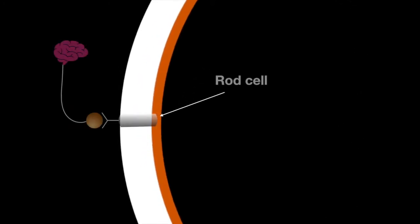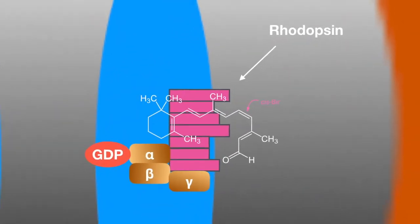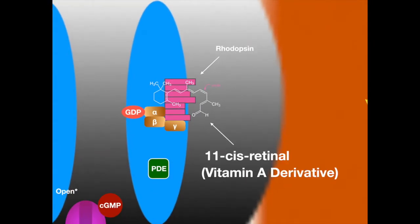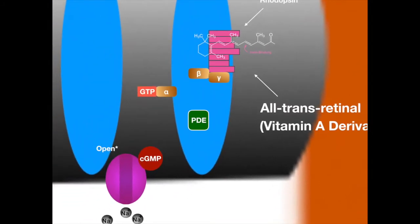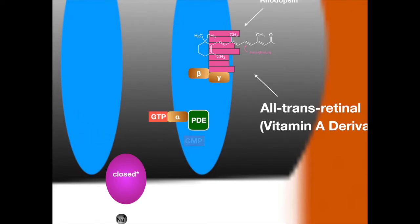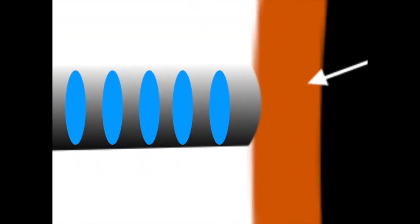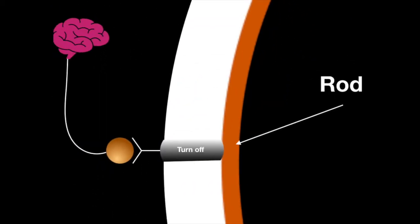In the cornea, on the rod cell, on rhodopsin, 11-cis-retinal captures light and changes to all-trans-retinal, which releases transducin from rhodopsin, which activates phosphodiesterase, turning cyclic GMP into GMP, which releases cyclic GMP from the sodium pump, hyperpolarizing the rod cell, turning it off, turning the bipolar cell on, sending the signal to the brain that you can see.